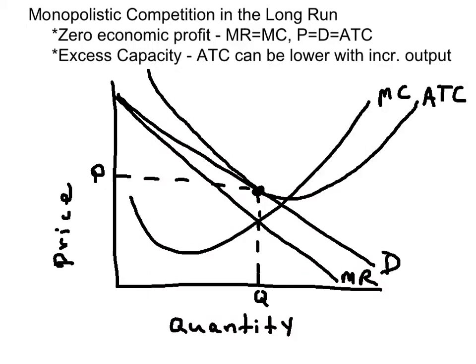Since there are many firms in a monopolistically competitive market, firms will enter and exit the industry in the long run, leaving the firm to break even. The firm will earn zero economic profit, or a normal profit.